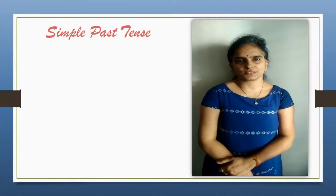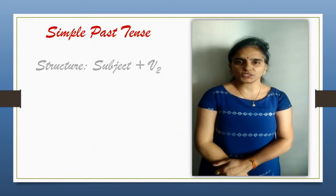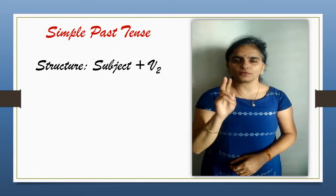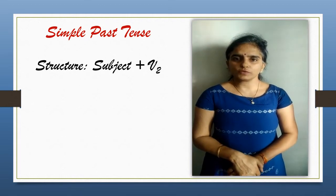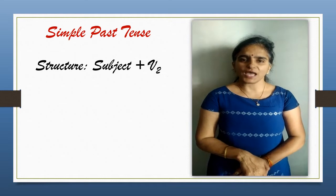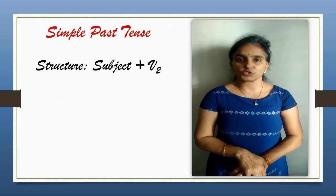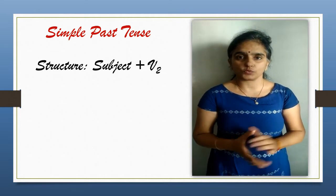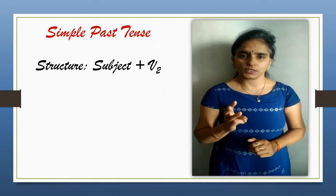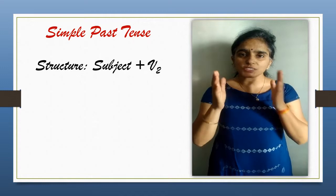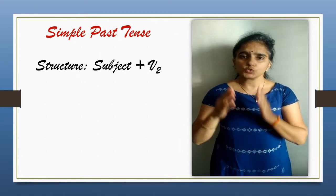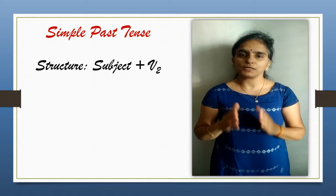Simple Past tense. The structure is subject plus second form of the verb. You will be learning the usage and its examples here. As you all are given the list of regular and irregular verbs in which V1, V2, and V3 are mentioned, the list of V2 will be very helpful to you to understand the simple past tense.